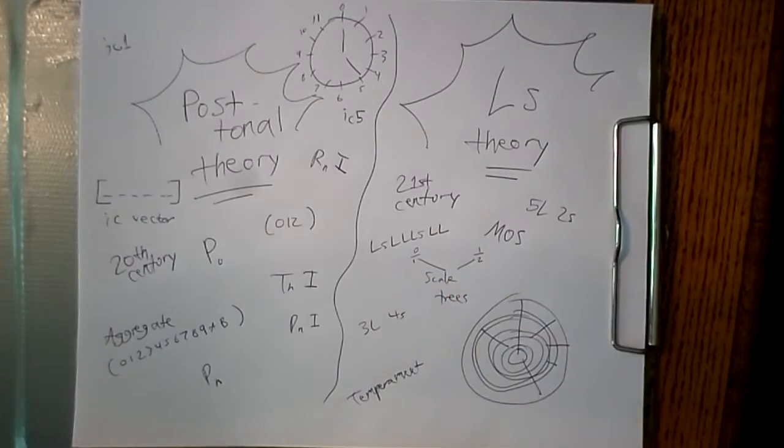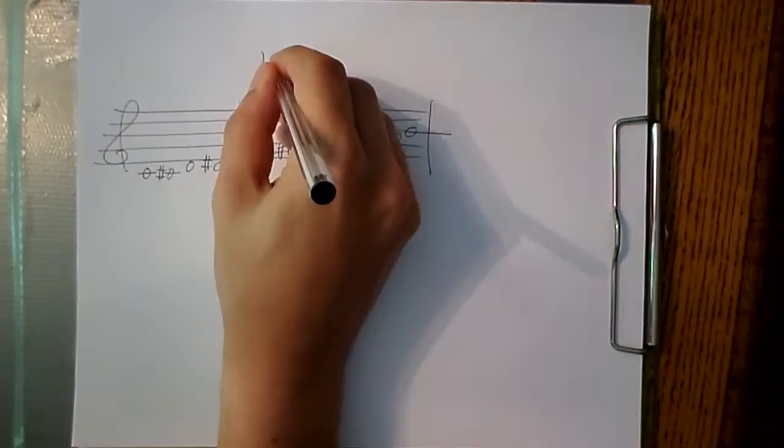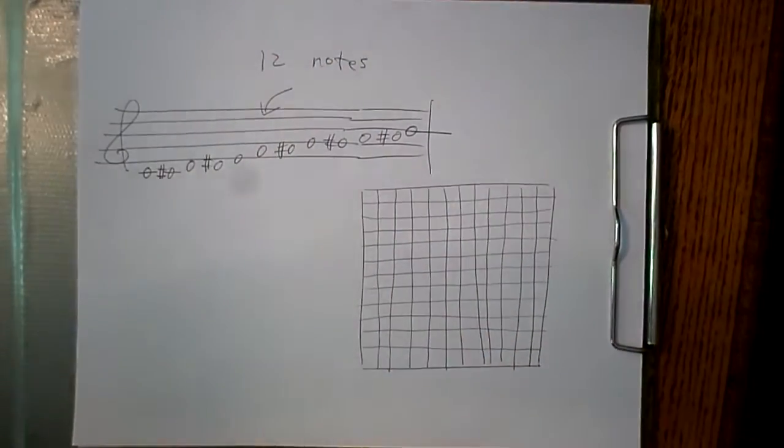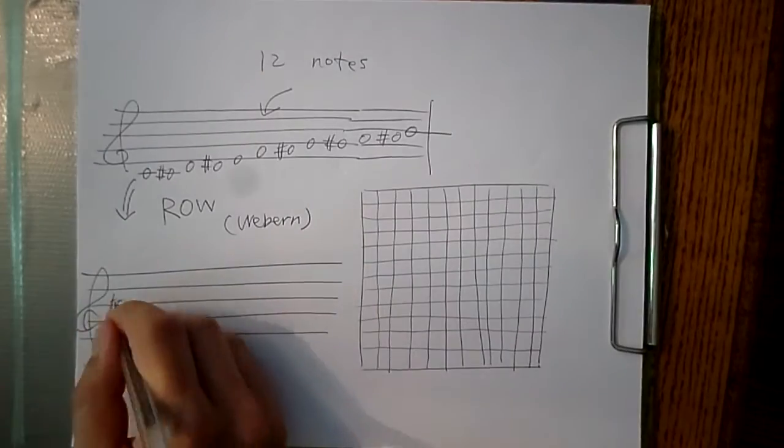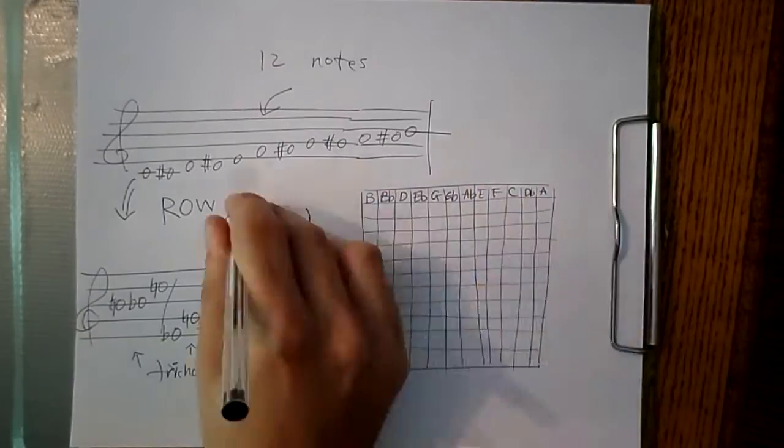These videos document the connections I've discovered between the two theories. First, let's go over post-tonal theory. Post-tonal theory arose as an explanation for the writing of dodecaphonic music, or music that uses all 12 notes of our piano in equal measure. This method was created so that the idea of tonality could be avoided in the music.